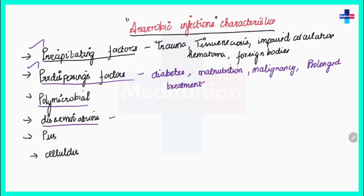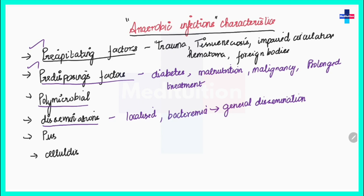Regarding dissemination: when an anaerobic infection begins, it is initially localized. After that, the infection can lead to bacteremia, which causes general dissemination — meaning diffuse spread of the disease process beyond its origin. Most anaerobic infections will become disseminated.